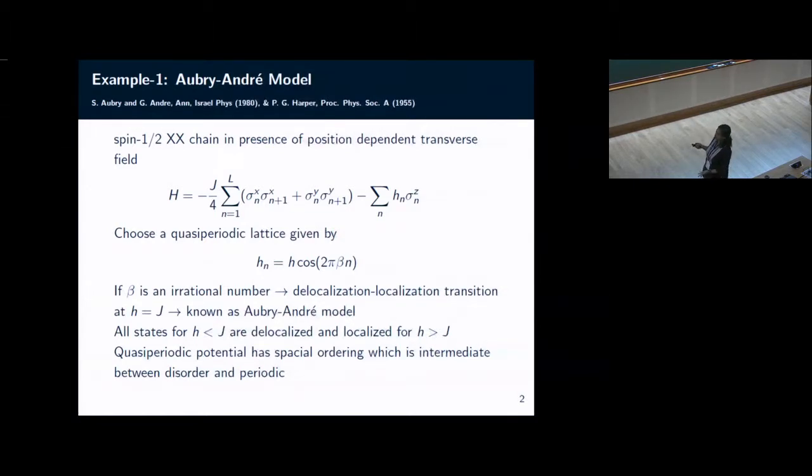People know that for a disordered system you cannot have extended state for any dimensions less than 3. On the other hand, in this particular Hamiltonian you do have a delocalized state even in one dimension, and hence one can study this localization-delocalization transition even in one dimension.